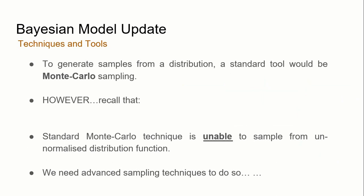So to generate samples from a distribution, as mentioned earlier, a standard tool will be the Monte Carlo method. However, because the posterior is usually unnormalized, as I mentioned earlier, the standard Monte Carlo technique would be limited. And this is because the standard Monte Carlo technique requires a full knowledge of the distribution, such as its mean, standard deviation, and its normalization constant. Without any of which, Monte Carlo technique would not be applicable. And as such, in order to sample from an unnormalized distribution, such as the posterior as defined over here, we will need advanced sampling techniques.